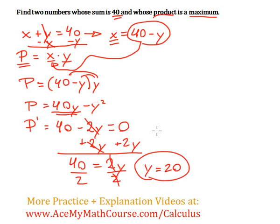What does that mean? Well, that means that when y is 20, we have either a minimum or a maximum value for P. In this case, it's going to work out to be a maximum.